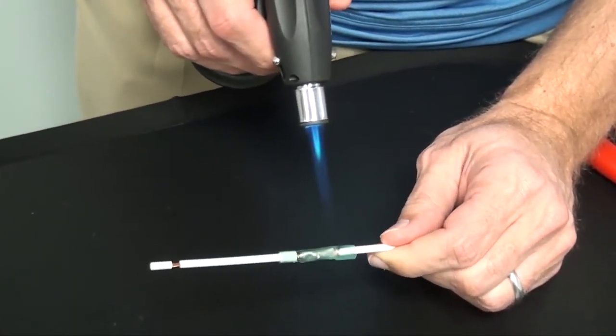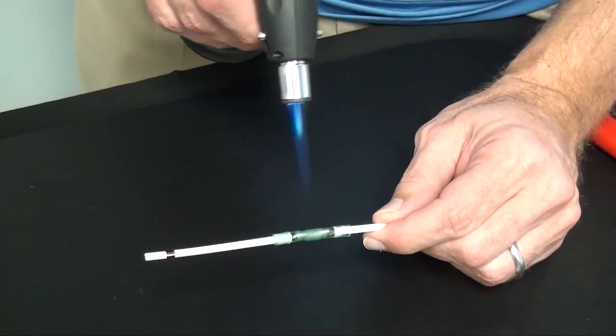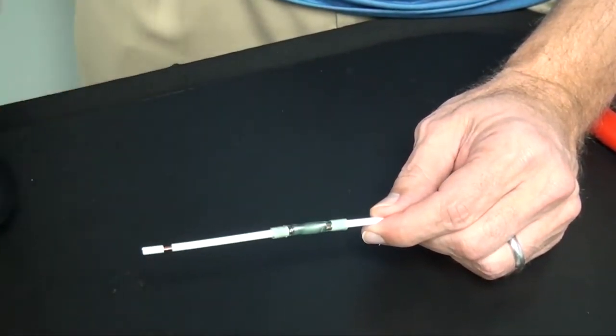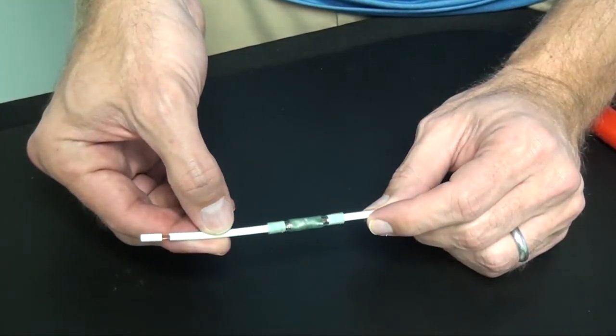I'll do the same on the other side. To heat evenly when using a butane torch, move the torch continually and if possible, rotate the wire. Once the tubing is fully recovered, you can now remove it from heat and let it cool.